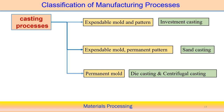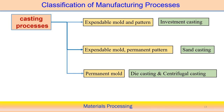For casting processes, the basic categorization is: expandable mold and pattern — where both mold and pattern can be destroyed, as in investment casting; expandable mold with permanent pattern — as in sand casting; and permanent mold — as in die casting or centrifugal casting. These are the basic categories of casting processes. We will discuss in detail when we follow the particular casting module.